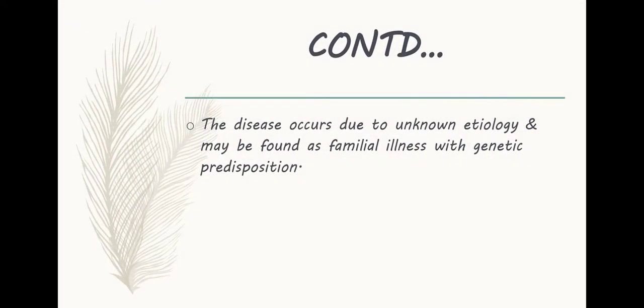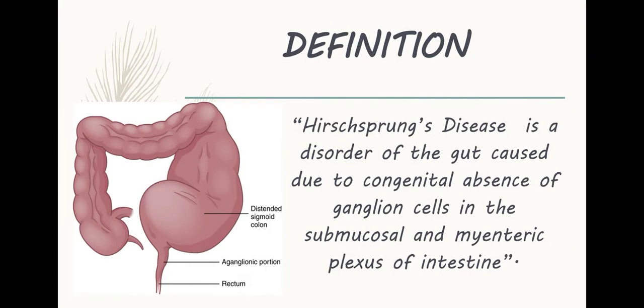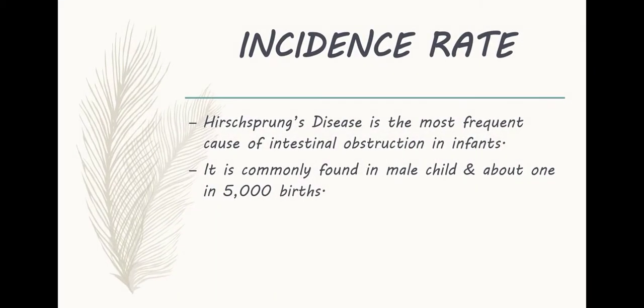The disease occurs due to unknown etiology and may be found as a familial illness with genetic predisposition. Definition: Hirschsprung's disease is a disorder of the gut caused due to congenital absence of ganglion cells in the submucosal and myenteric plexus of the intestine. Incidence: It is the most frequent cause of intestinal obstruction in infants, commonly found in male children, occurring in about one in five thousand births.